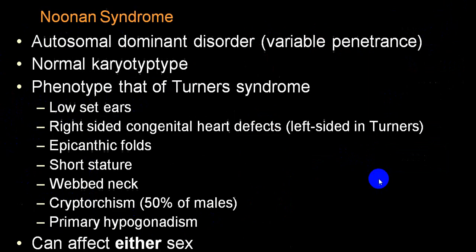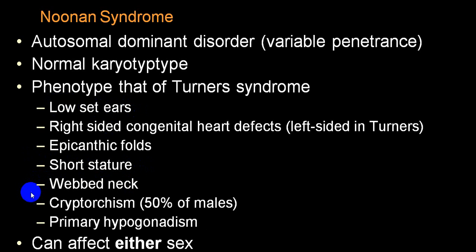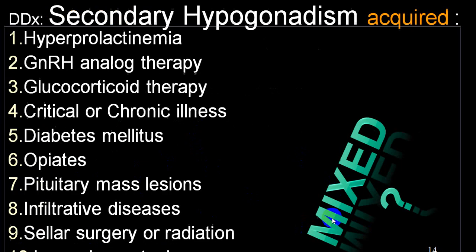Noonan syndrome is an autosomal dominant condition, also called the phenotype of Turner syndrome. It features left-sided heart defects, right-sided congenital heart abnormalities, epicanthal folds, low-set ears, short stature, webbed neck, and cryptorchidism. About 50% of males will have cryptorchidism and hypogonadism. It can affect both males and females.